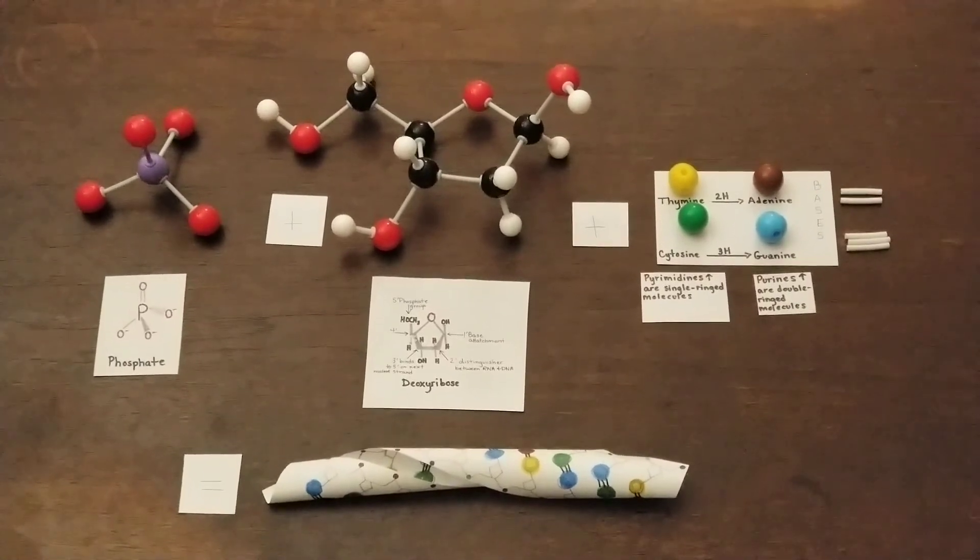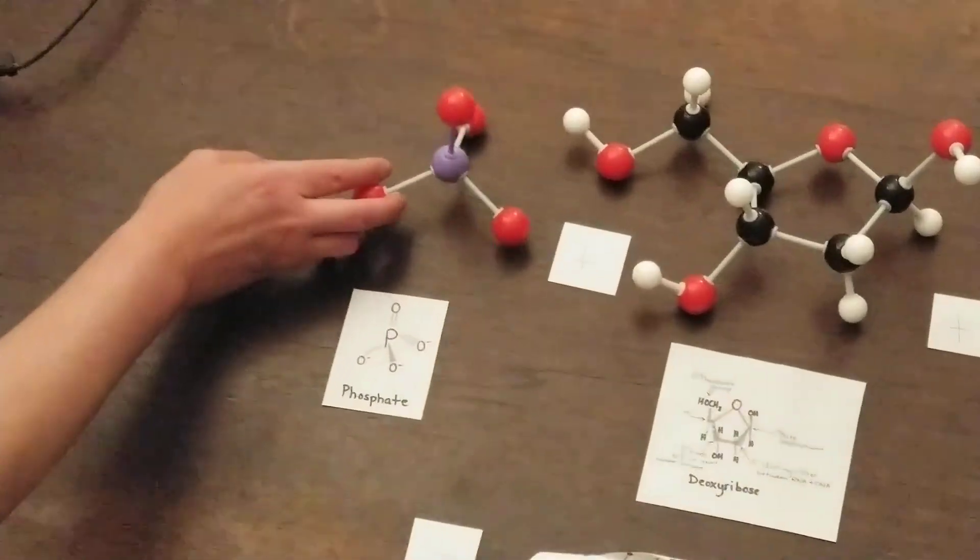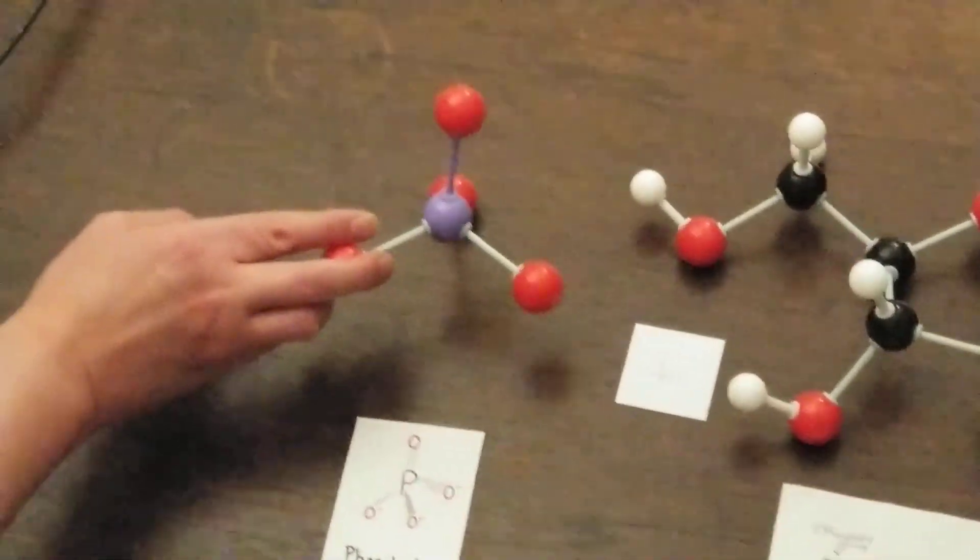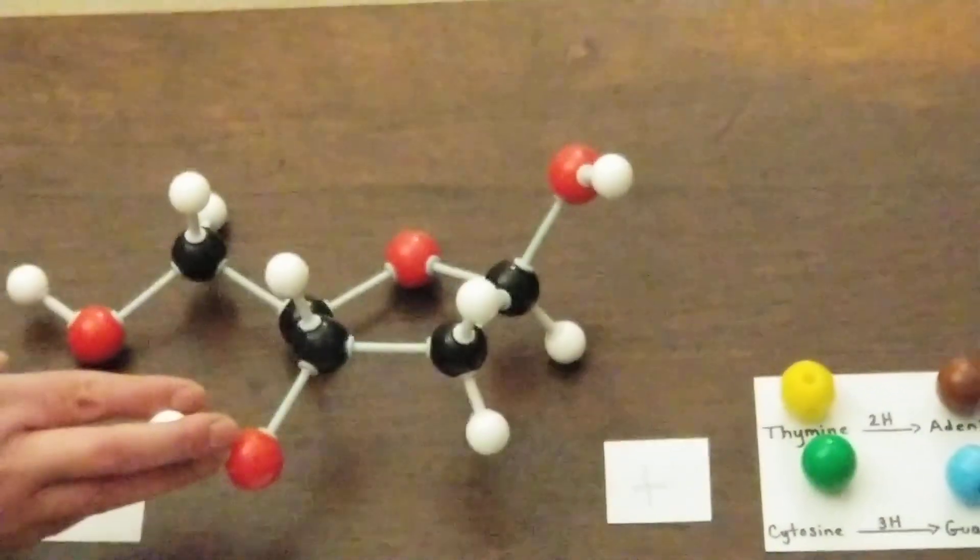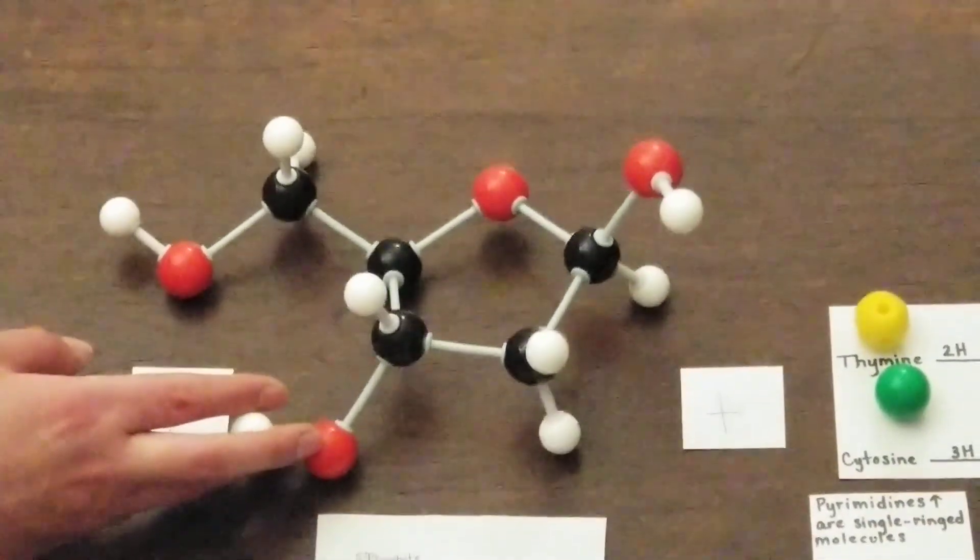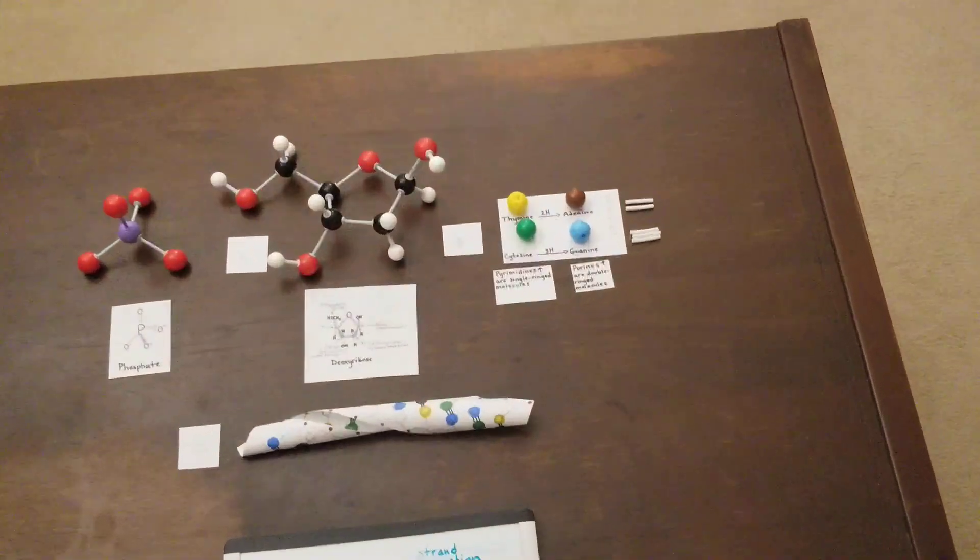Each strand consists of nucleotides, which are comprised of a phosphate, a sugar, and a base. Here we have our phosphate molecule with the double-bonded oxygen. Here we have the deoxyribose molecule, and at the end, we have our nitrogenous bases.